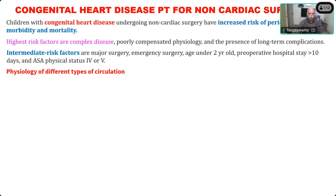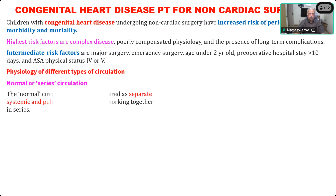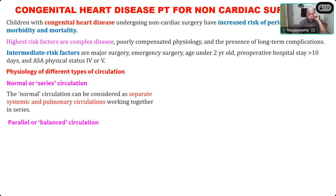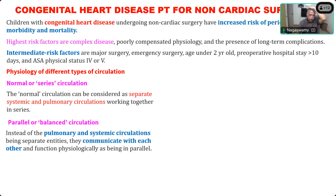The physiology of different types of circulation is the first basic concept we should all have a clear idea about. The first is called normal series circulation — the normal circulation can be considered as separate systemic and pulmonary circulations working together in series. Then there is parallel or balanced circulation, where instead of pulmonary and systemic being separated, they communicate with each other and function physiologically as being in parallel.